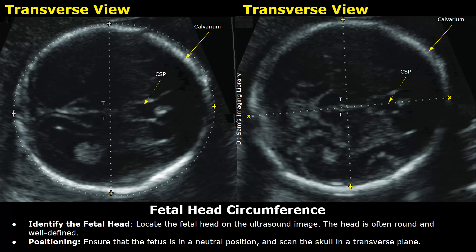Hello everyone, this is Dr. Sam, and today you will learn how to measure fetal head circumference on ultrasound. Fetal head circumference is one of the biometric parameters that is used to estimate the fetal weight and gestational age.